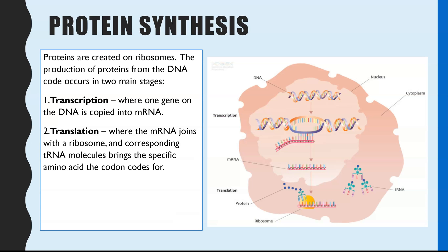So first of all, just an overview of protein synthesis. This is the process where proteins are made — the polypeptide chain, or the primary sequence of a protein — and primarily that is happening on the ribosome.